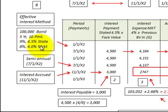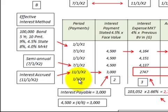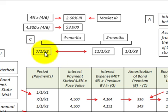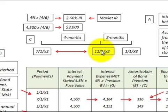So we're going to amortize the premium down on that bond. Our last semi-annual interest payment was on 7-1-X2, and our next regular interest payment date is going to be on 1-1-X3. But we have to calculate the accrued interest between those two payment dates on 11-1-X2. Looking at our timeline, we have a four-month period from 7-1-X2 to 11-1-X2 that we have to account for.